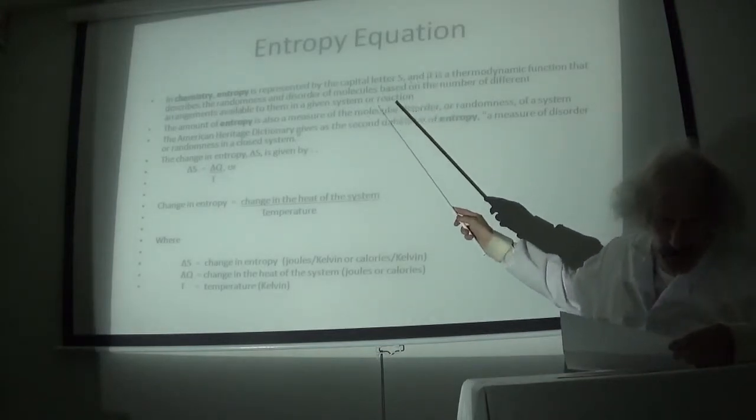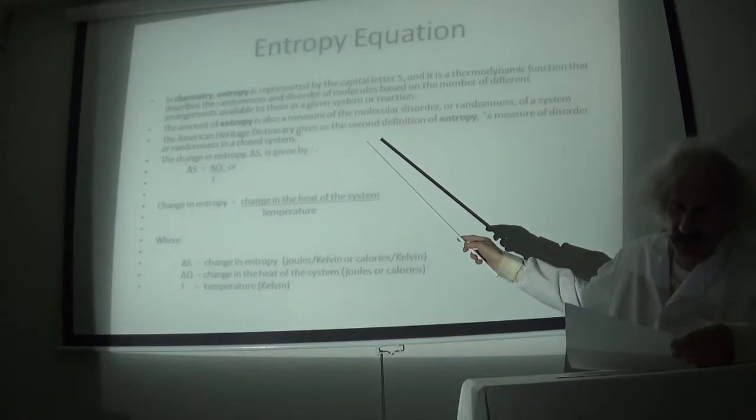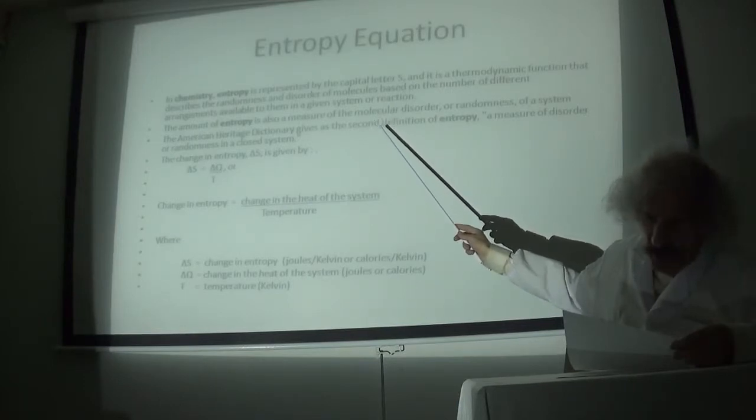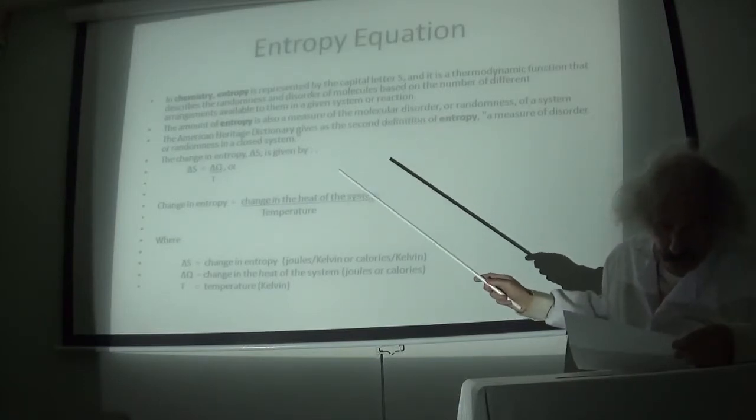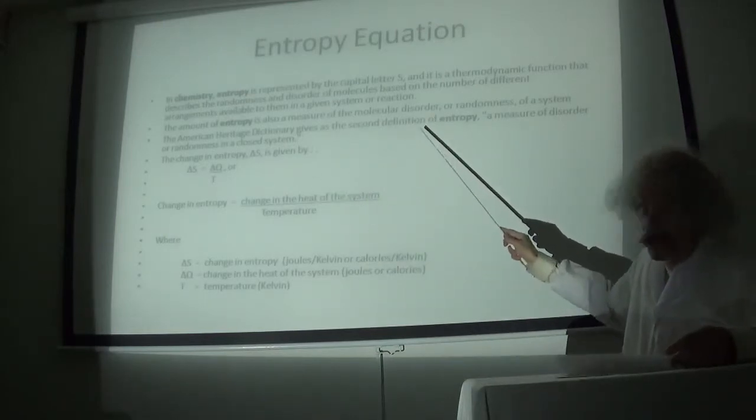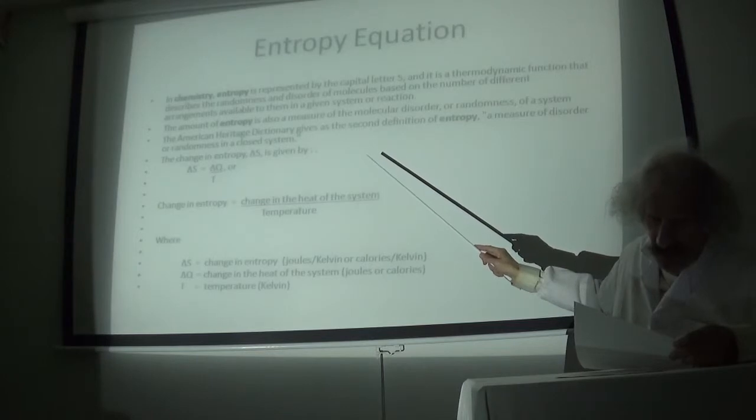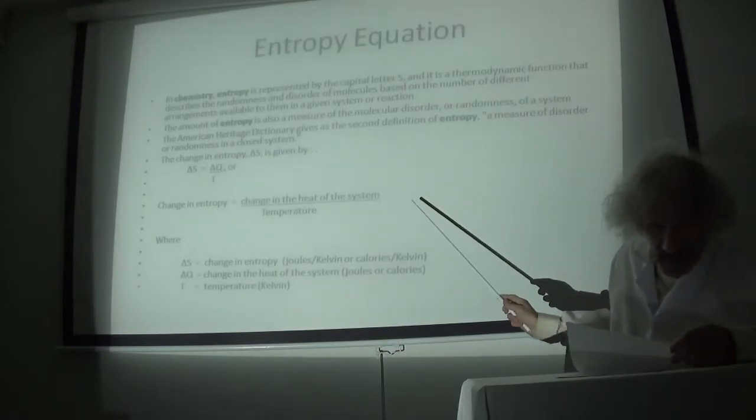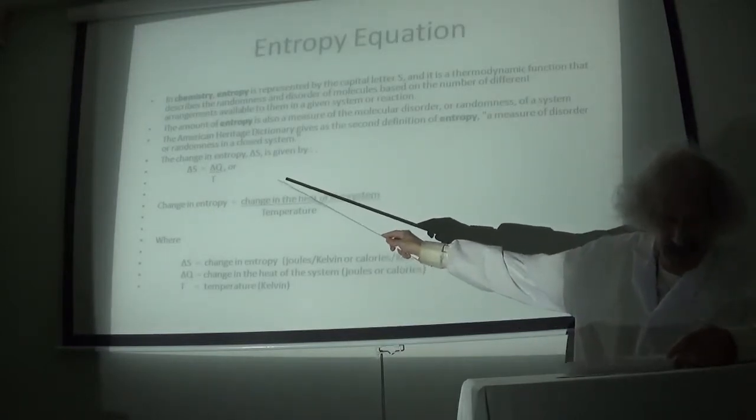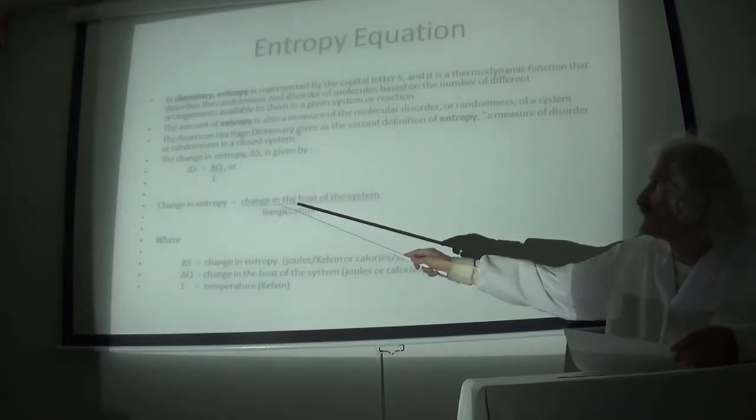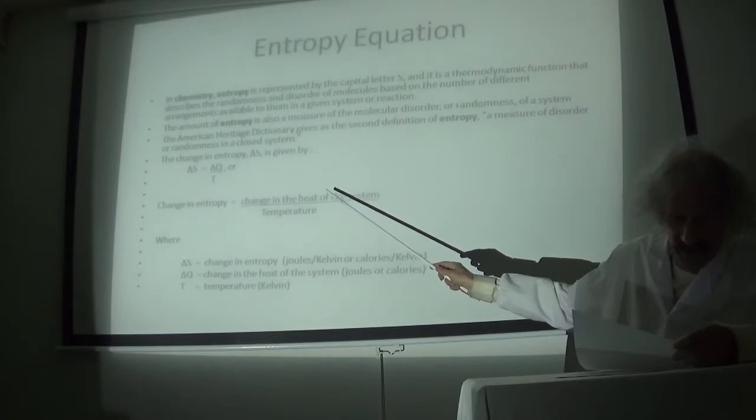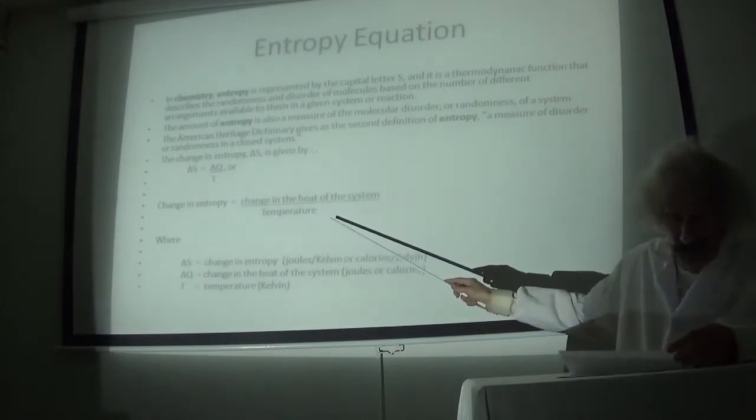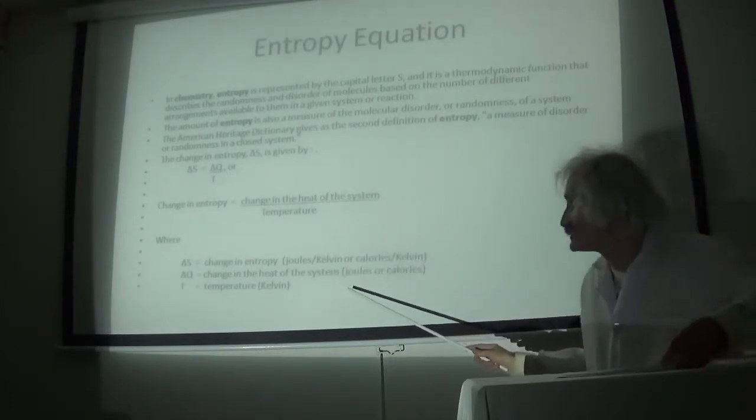The entropy equation. In chemistry, entropy is represented by the capital letter S, and it is a thermodynamic function described by the randomness or disorder in the system. The American Heritage Dictionary also describes entropy as a measure of the disorder or randomness in a closed system. Delta S is equal to delta Q over T, where delta S is the change in entropy, equal to the change in heat in the system divided by the absolute temperature in Kelvin.